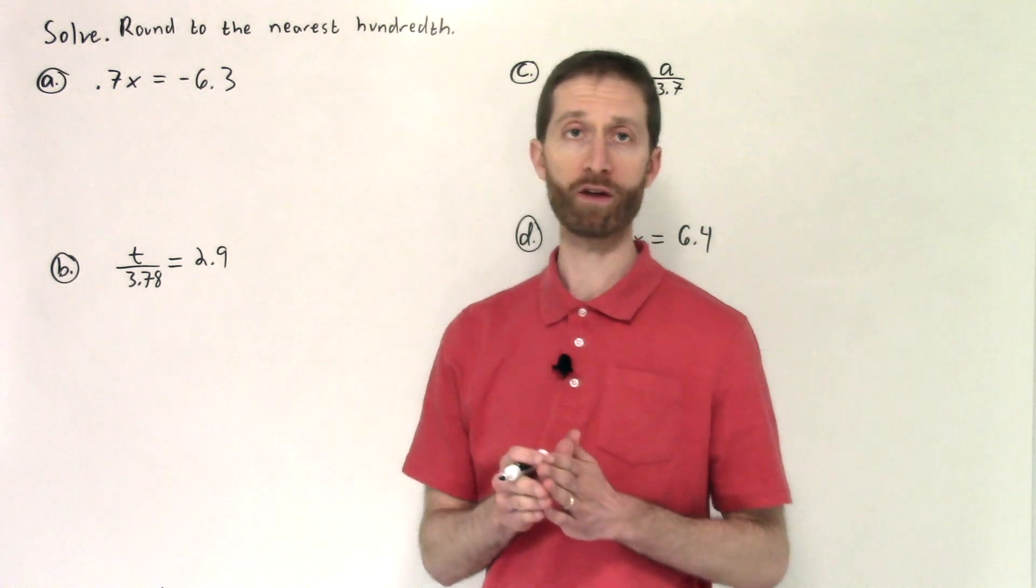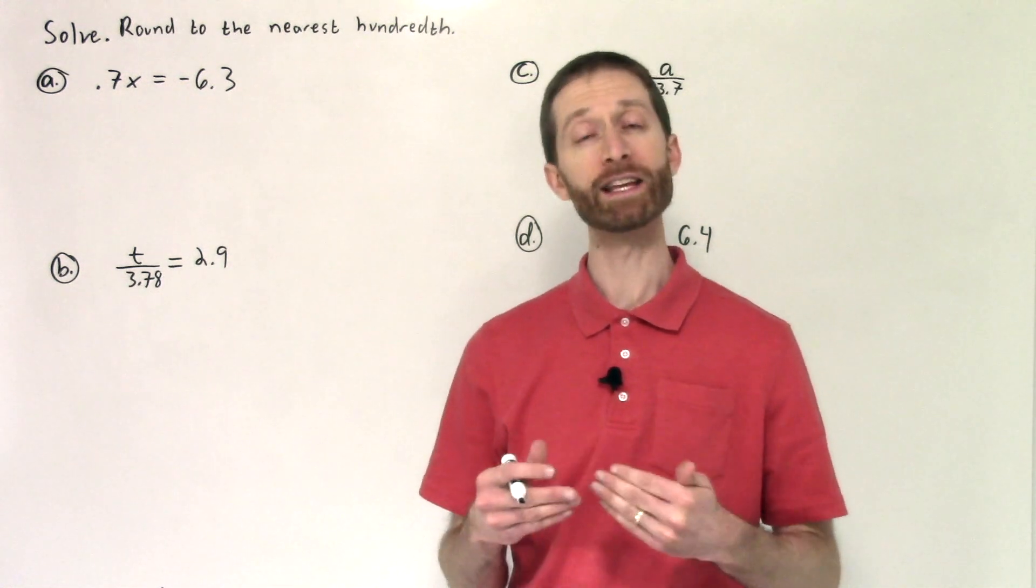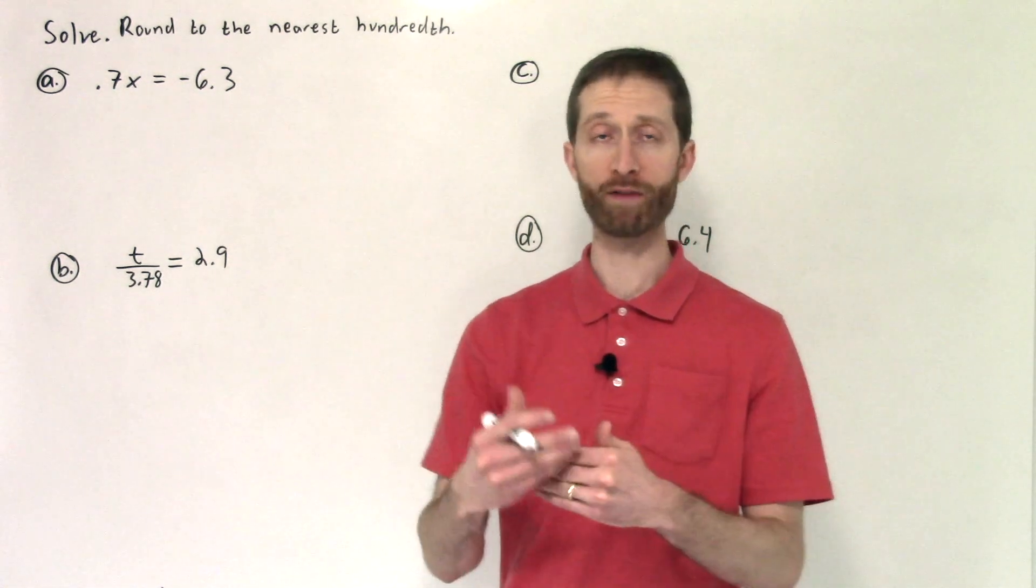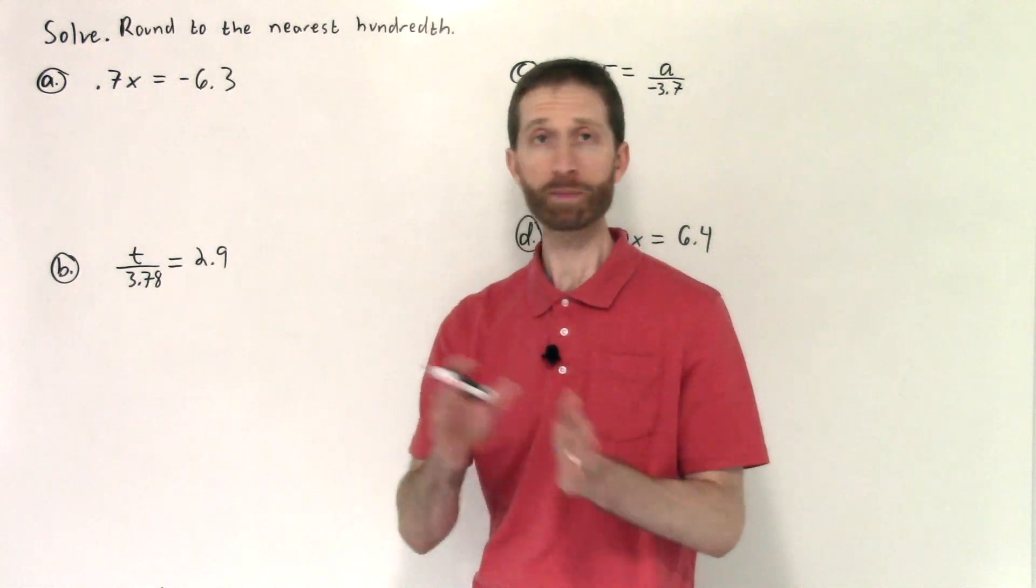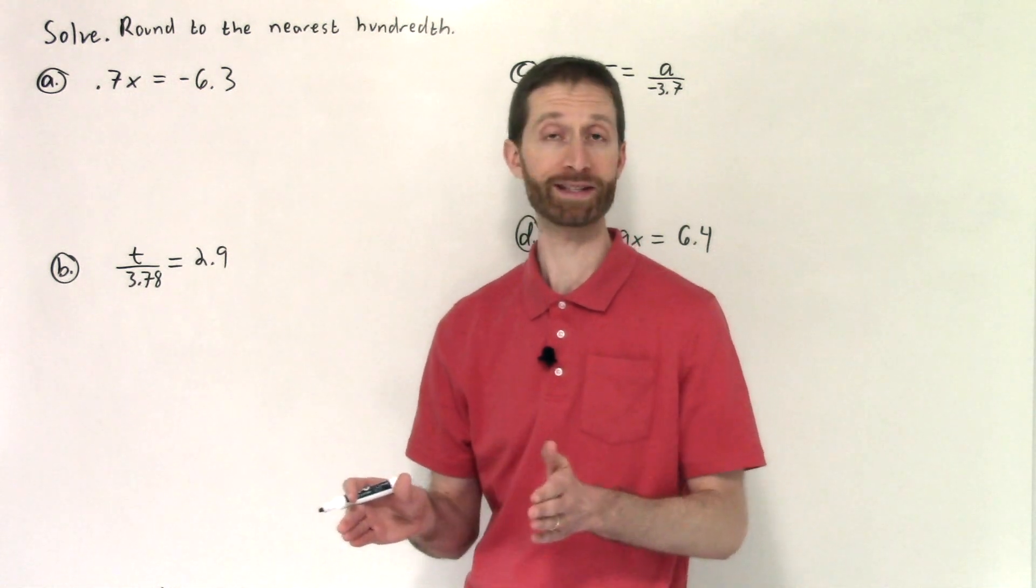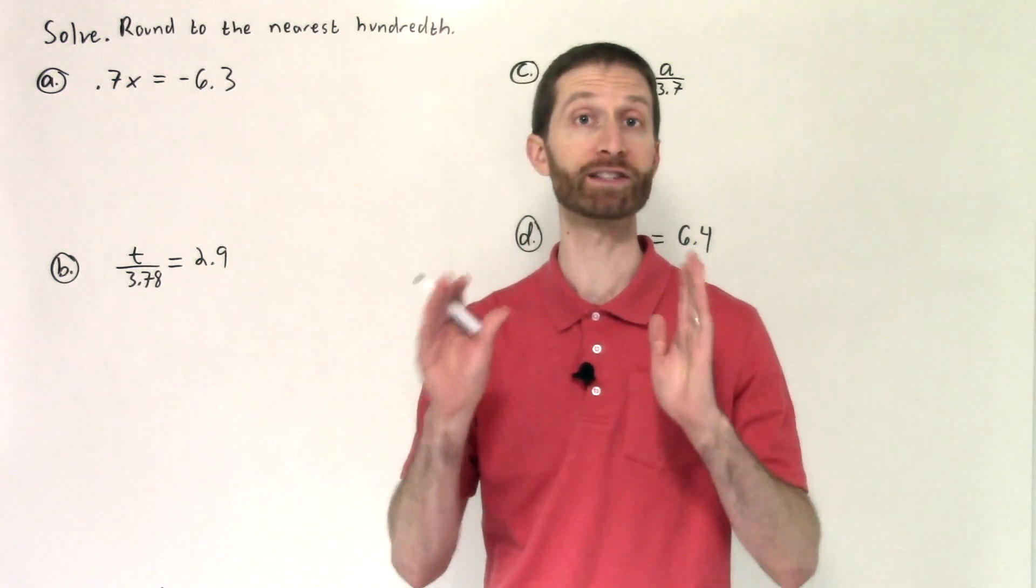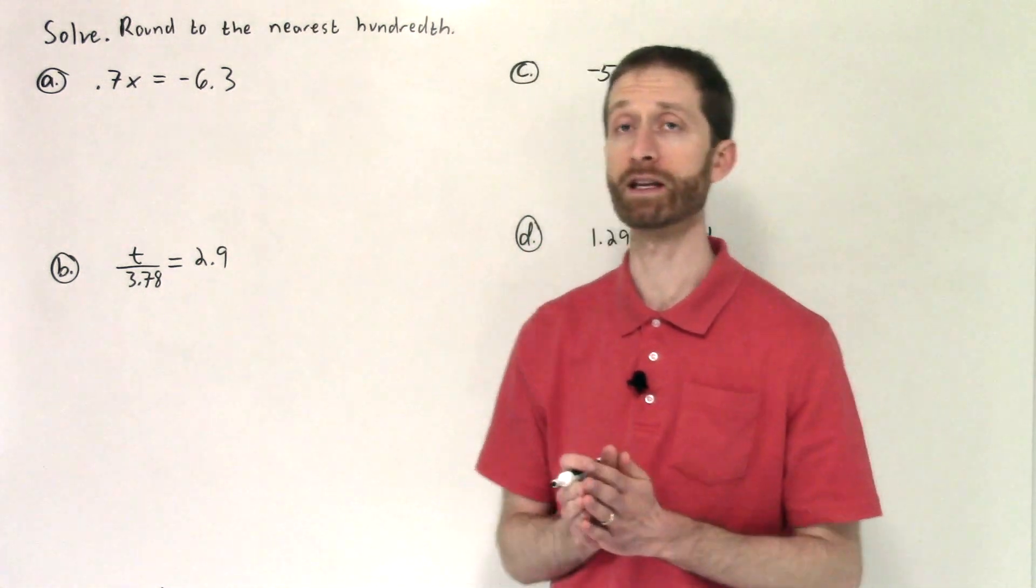So the number one rule when solving equations is isolating those variables by undoing the order of operations. We know that. And just because there are decimals present doesn't change any of the process we're doing. So that's the biggest piece of advice I can give you.